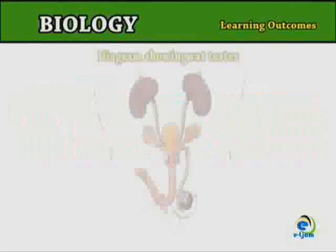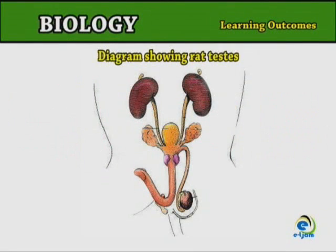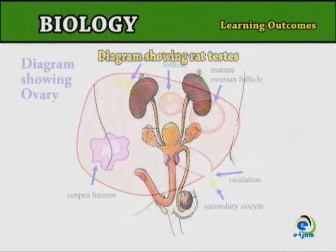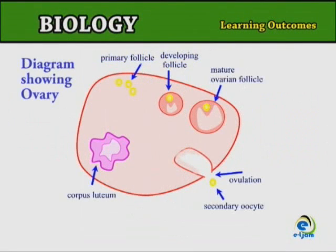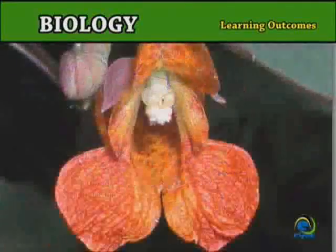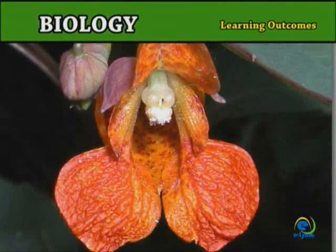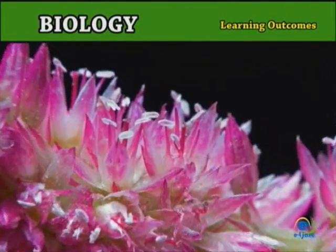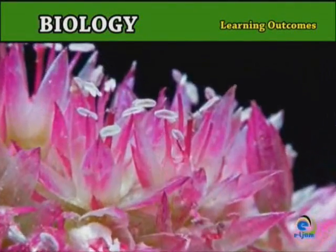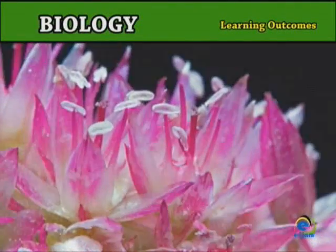In animals, meiosis occurs in the testes and ovaries. In plants, meiosis occurs in the anthers and ovules.